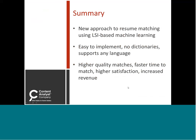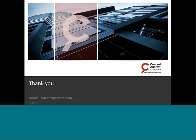In short, CAT is a whole new approach to resume matching using our LSI-based machine learning engine. It's very easy to implement in weeks, does not require any building or maintaining of dictionaries, supports any language, and at the end of the day is going to get your users higher quality matches, faster time to match, higher user satisfaction, and potentially increased revenue. That concludes our demo — thank you very much.